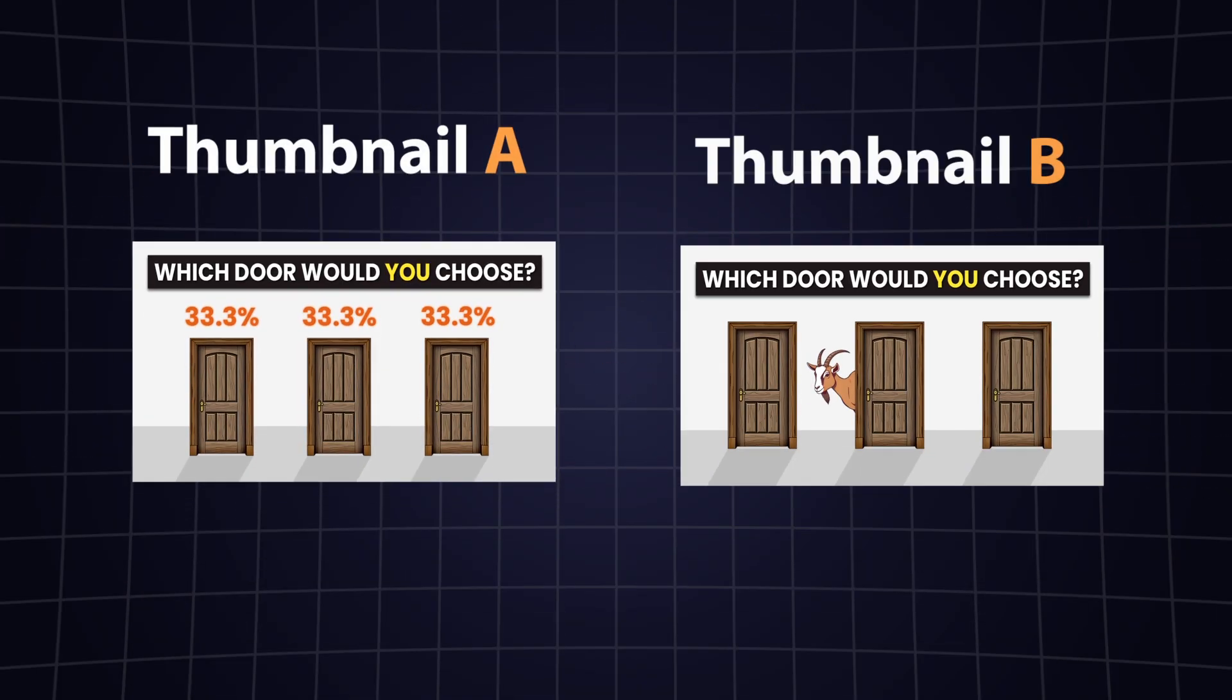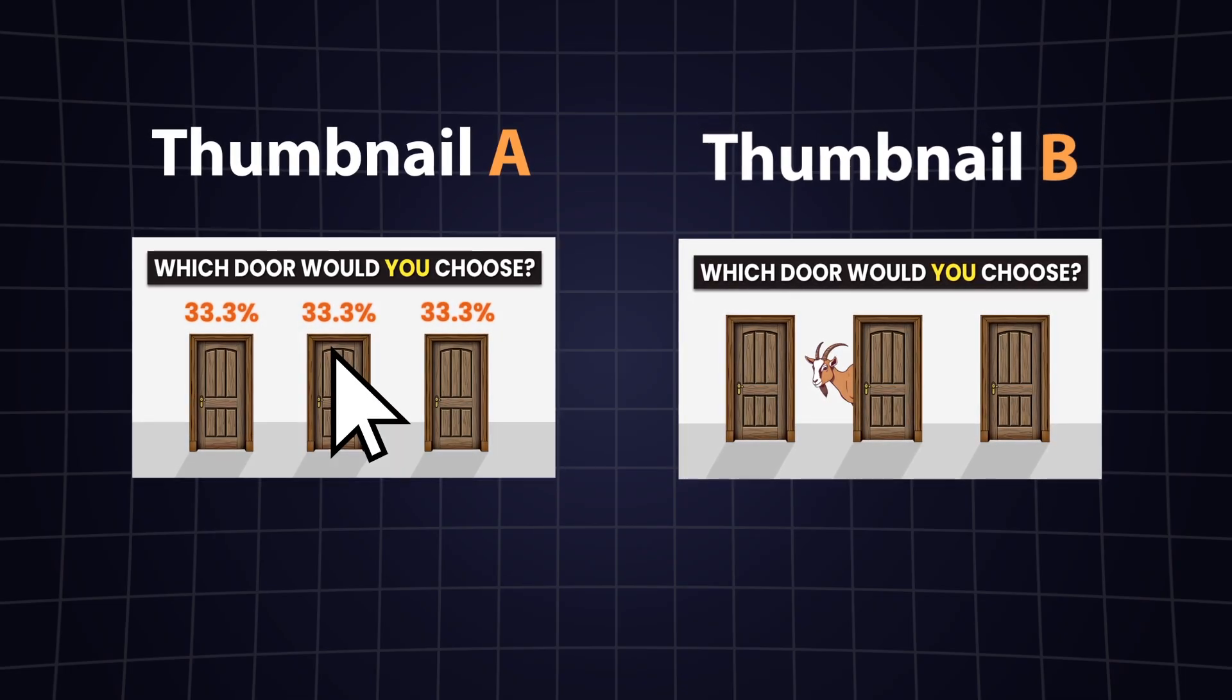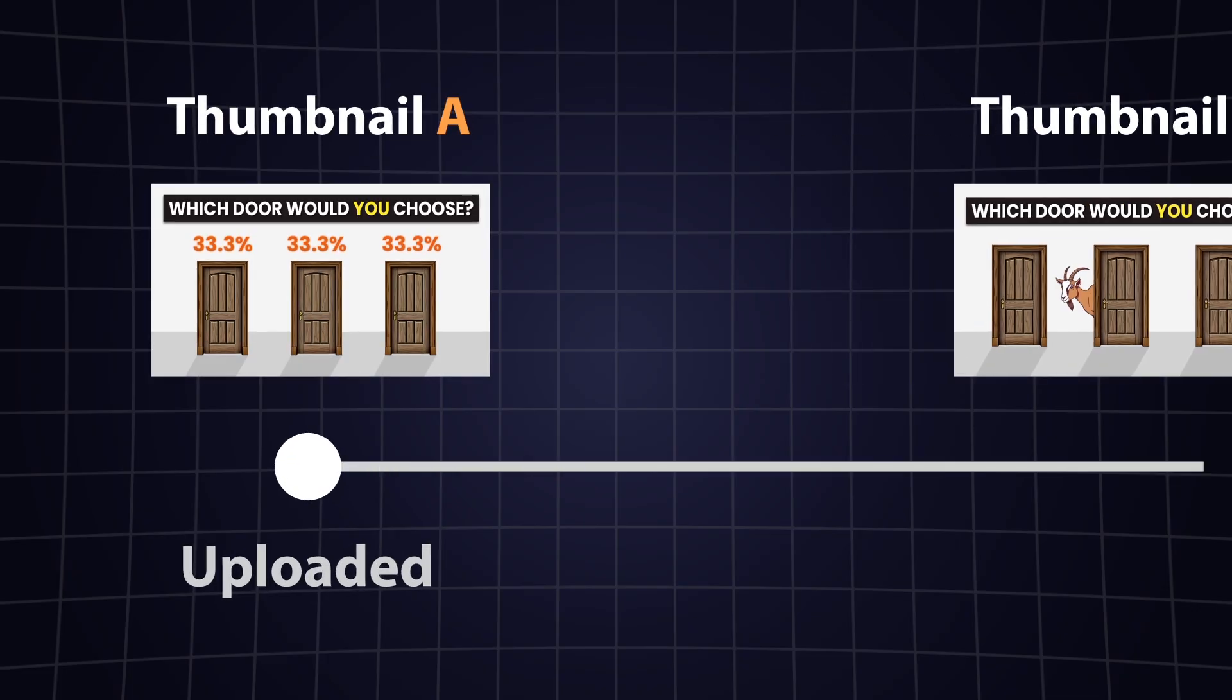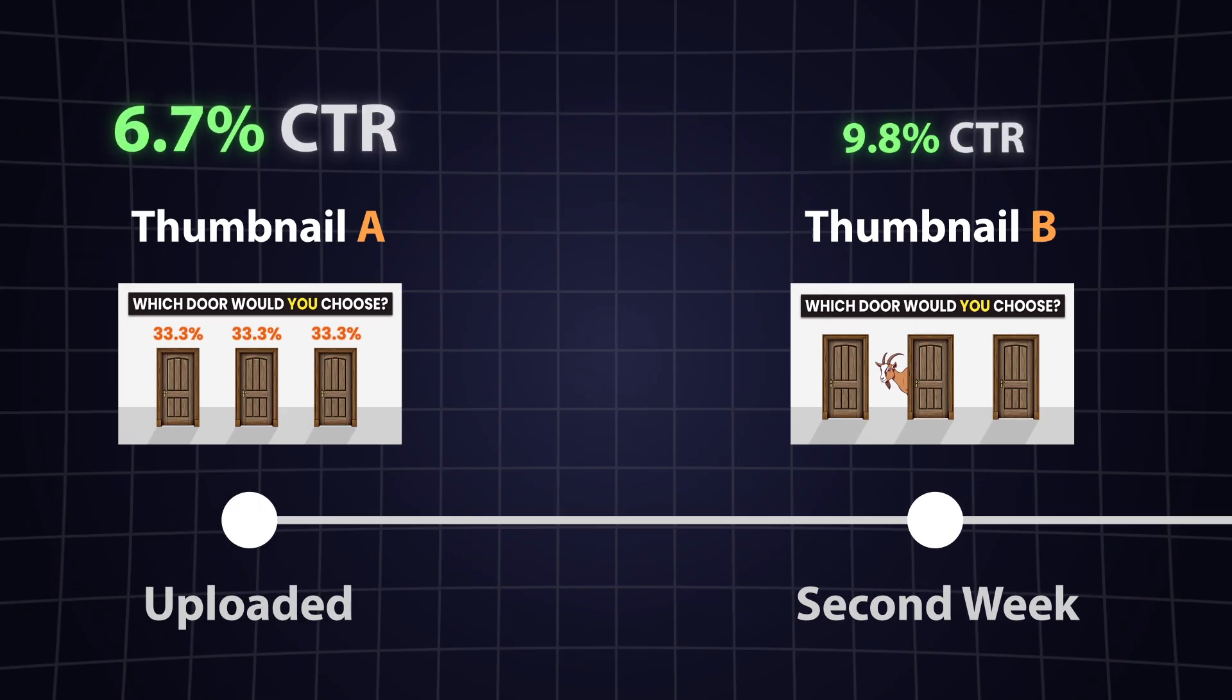As a content creator, I might want to optimize my thumbnails to get more clicks on my videos. If I simply post the video with thumbnail A for the first week, and then switch to thumbnail B for the second week, I might see that B got more clicks.